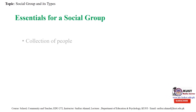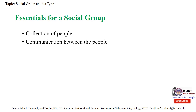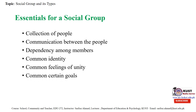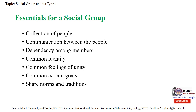Now, there are some essentials of a social group: collection of people, which is very important for a social group; communication between people — if there is no communication, there is no social system; dependency among members — in a social group, members must depend upon one another; common identity — there should be at least one characteristic unique to the group; common feeling of unity; common goals — the social group must have common goals; and shared norms and traditions.